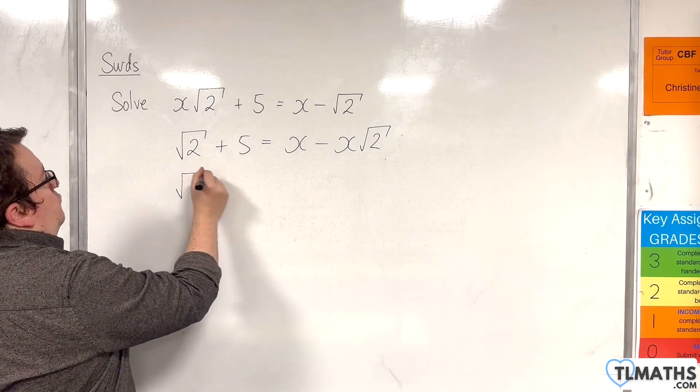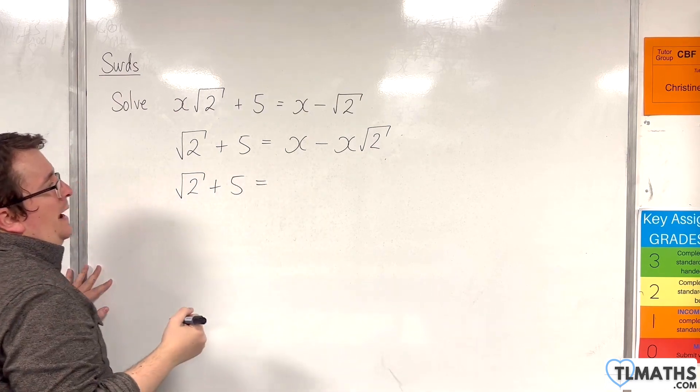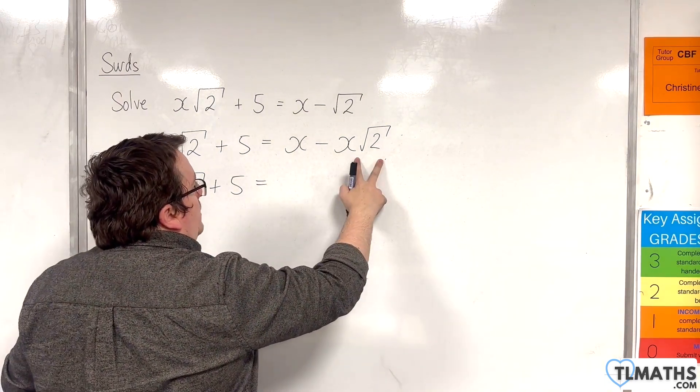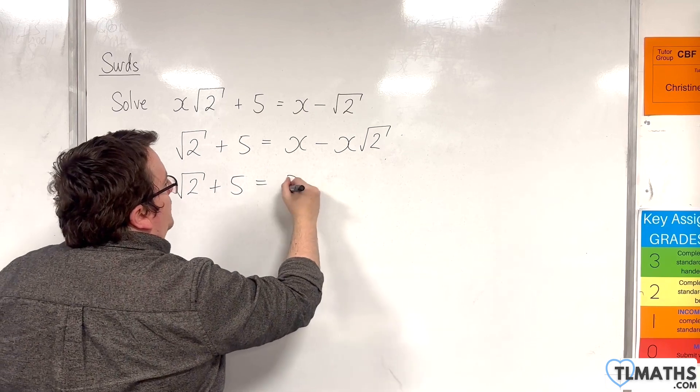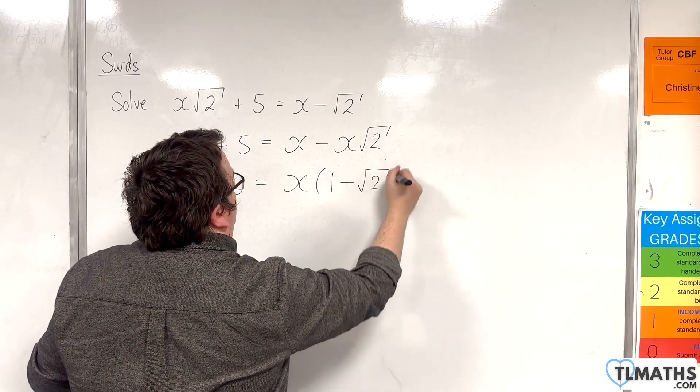So then I've got √2 plus 5 on the left-hand side. And on the right-hand side, I can factorize that. The technique here is to factor out the x and have 1 minus √2.